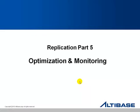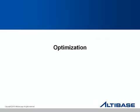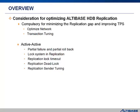We're going to talk about the optimization first. There are some considerations for optimizing Altebiz's HDB replication. Let's have a look at the considerations for minimizing the replication gap and improving the TPS. The replication gap is not found to be a problem, but when it comes to conflicts, they could occur. Minimizing the gap is important. We're going to look at how to minimize it through network optimization and transaction tuning.